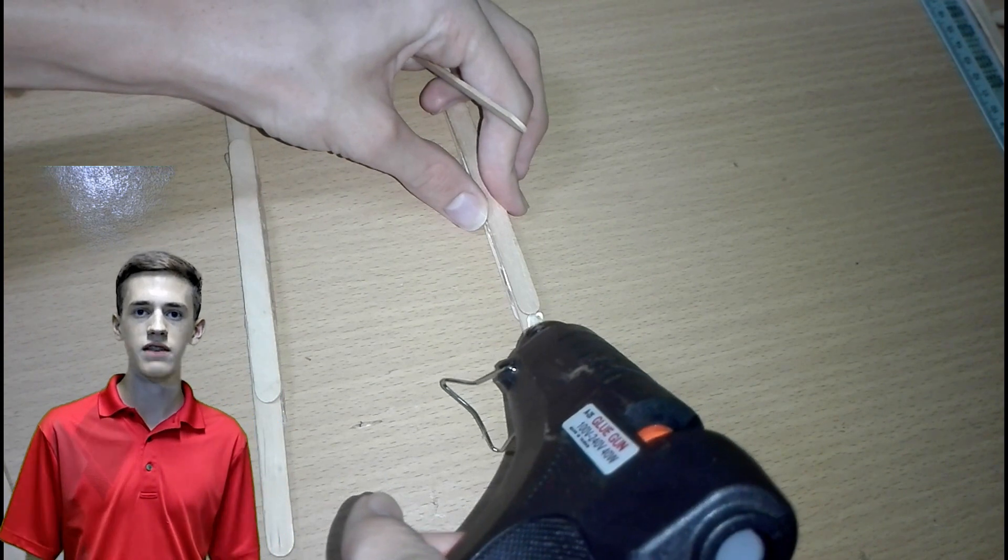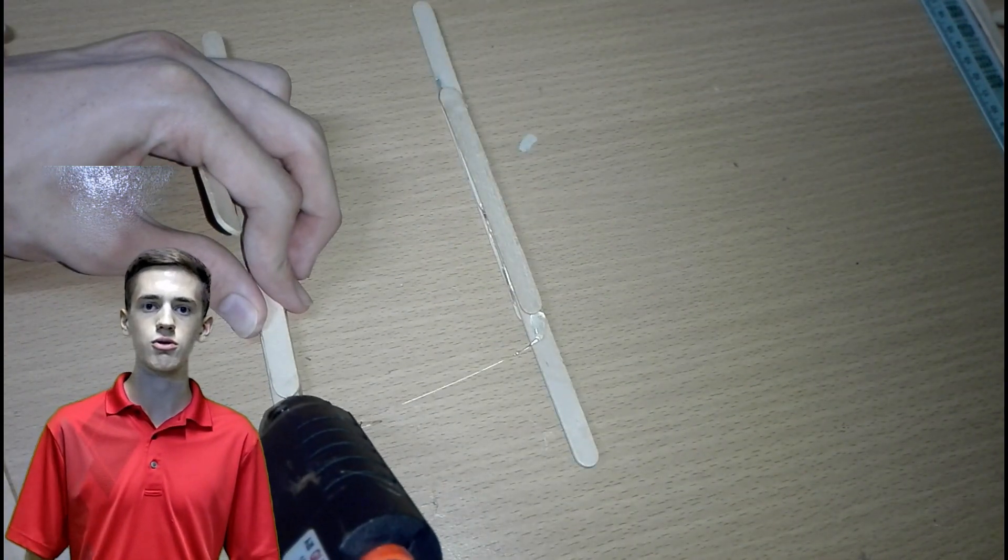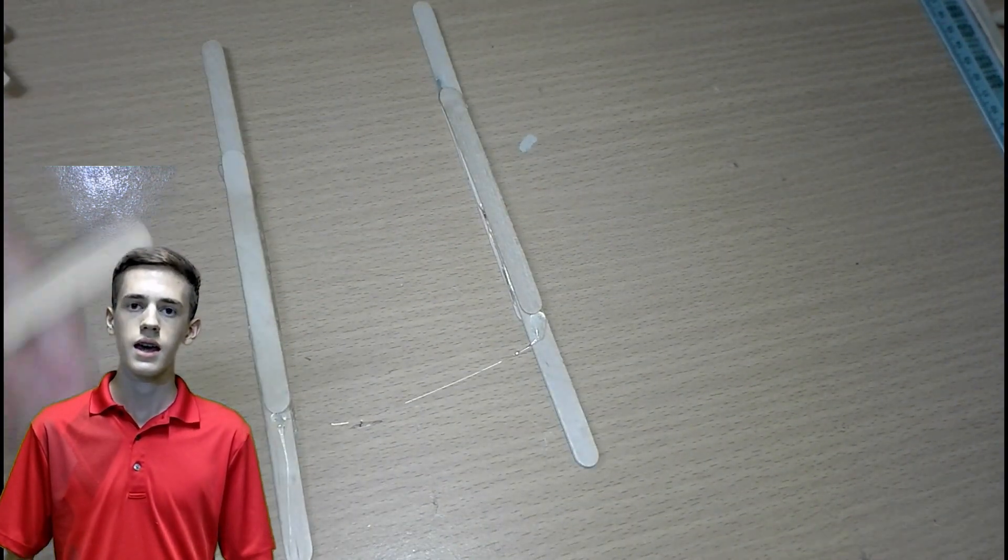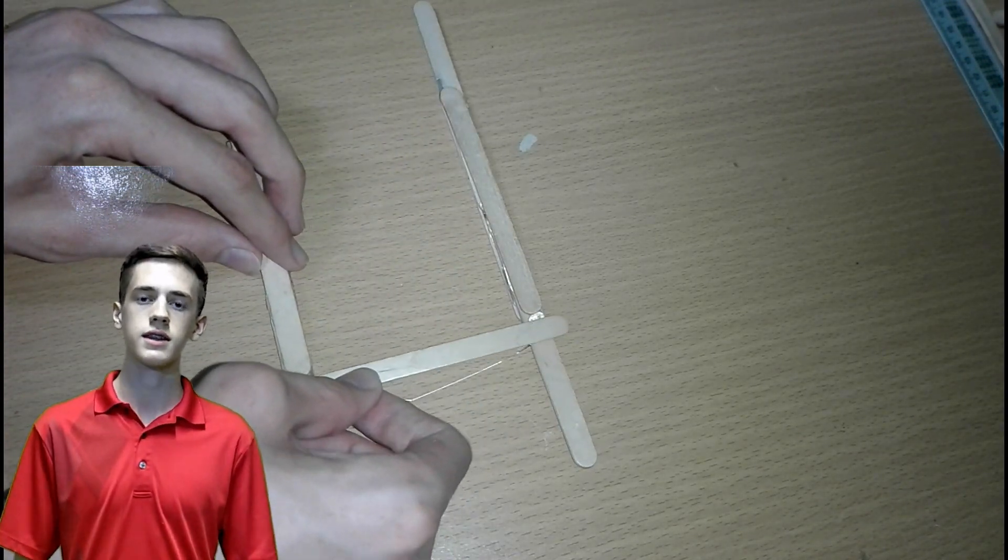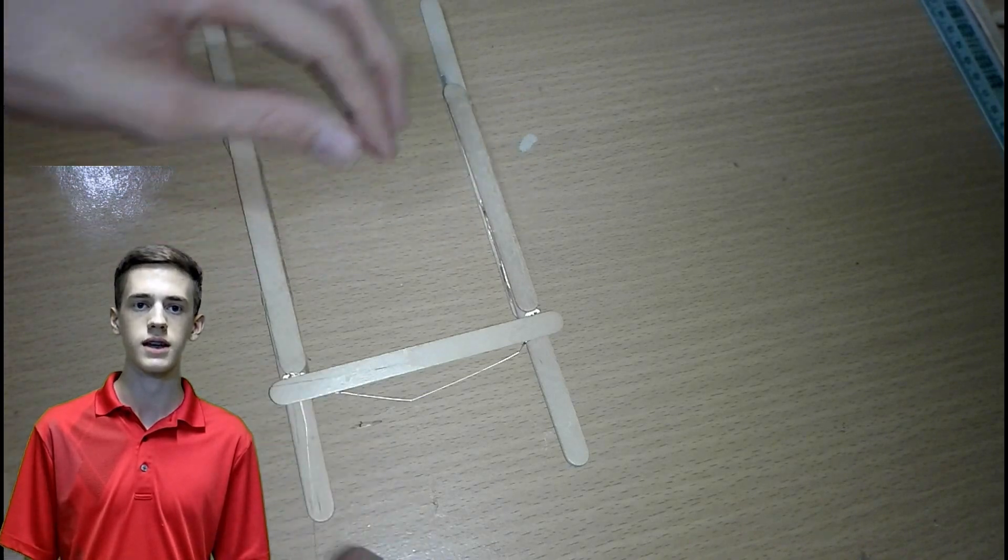Next we are going to make the base of the car. To do this we are going to use two of the sets of popsicle sticks and lay them on a flat surface about four inches apart from each other. Then we're going to connect them using two popsicle sticks.